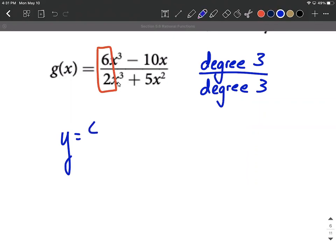So in this case, we have the ratio of 6 divided by 2, or with a little bit of simplifying down, we can get y equals 3. So we're going to have a horizontal asymptote at y equals 3.